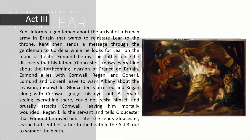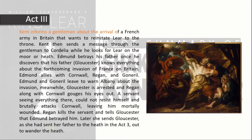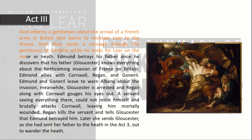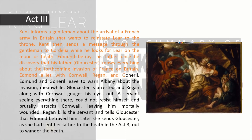Act 3: Kent informs a gentleman about the arrival of a French army in Britain that wants to reinstate Lear to the throne. Kent then sends a message through the gentleman to Cordelia while he looks for Lear on the moor. Edmund betrays his father once he discovers that Gloucester knows everything about the forthcoming invasion of France on Britain. Edmund allies with Cornwall, Regan, and Goneril.